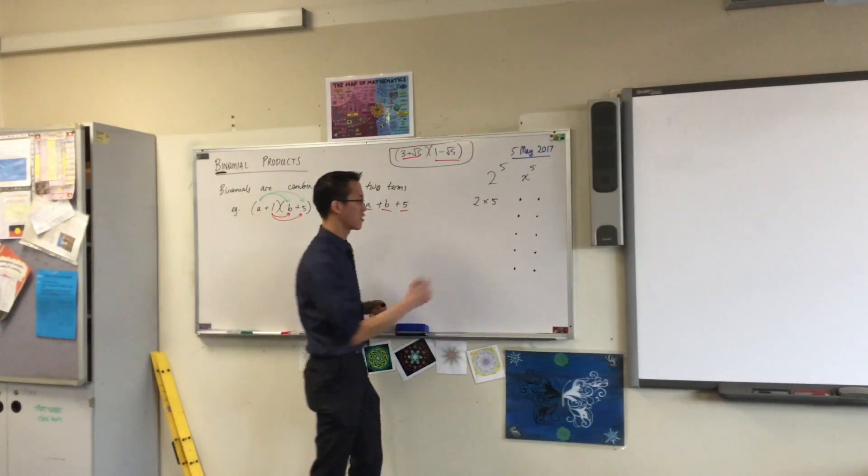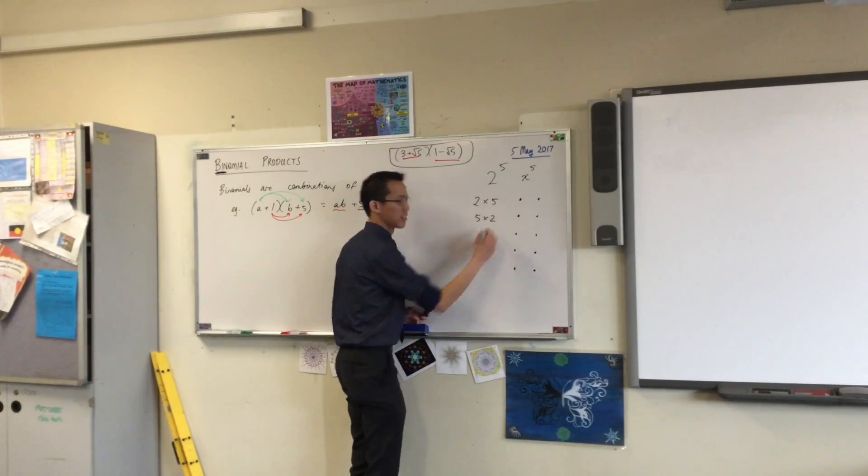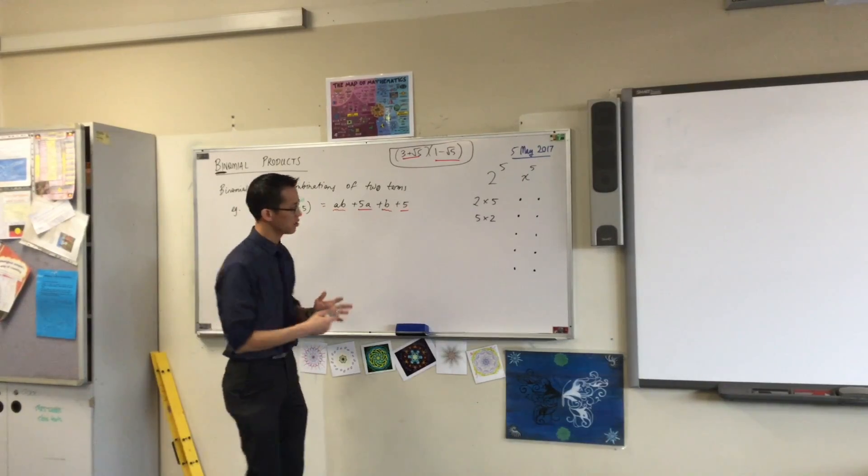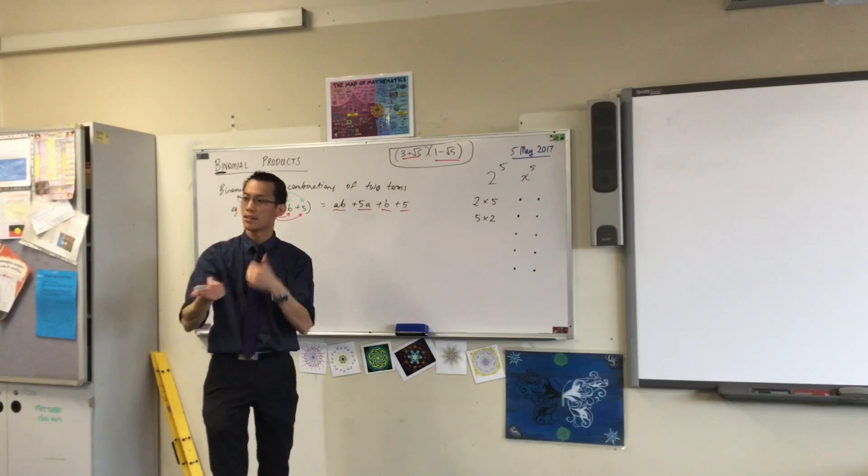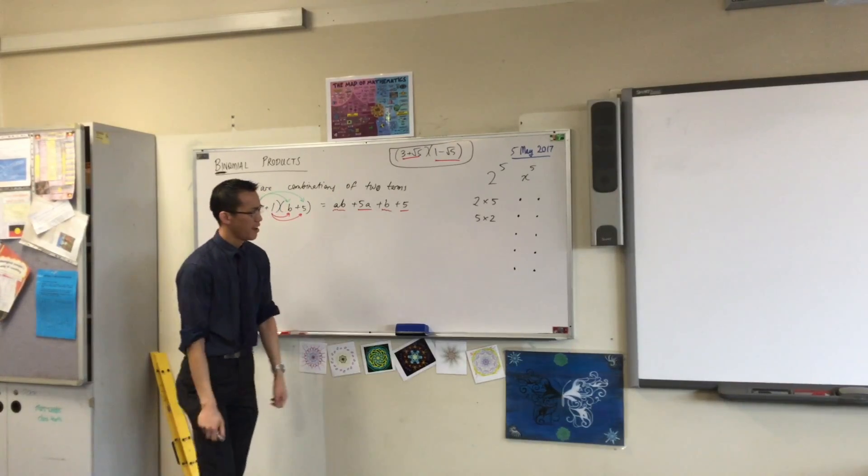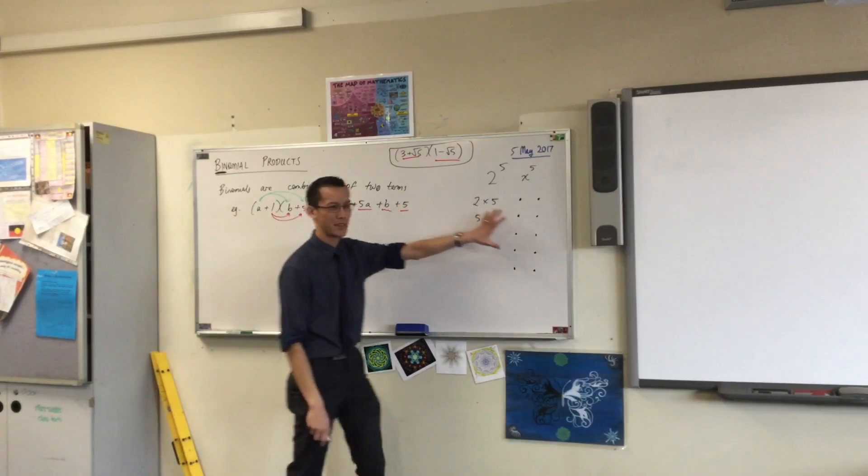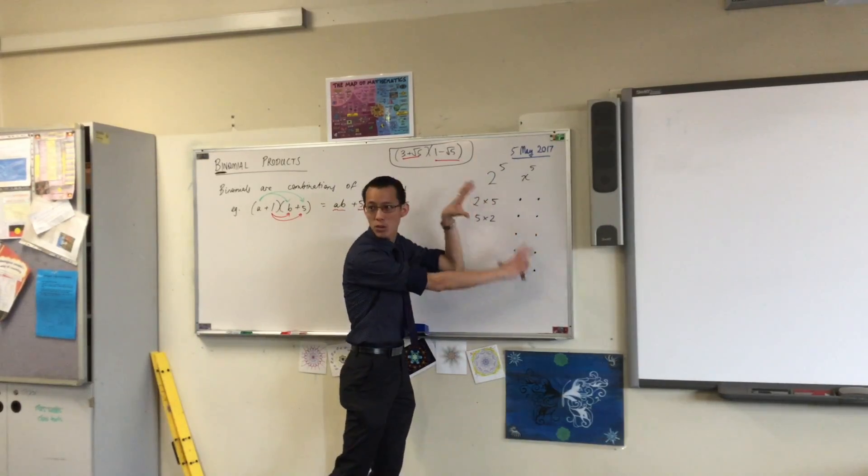And it's one of the nice ways that you can convince yourself and remember that 2 times 5 and 5 times 2 are the same thing. Because all you need to do is just kind of look at it and then turn your head. And you can see, one's 2 times 5. The other is 5 times 2. Okay? In other words, we're trying to represent a product with a picture.